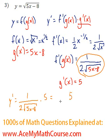So that will simplify to 5 over 2 square root of 5x minus 8. That's it.